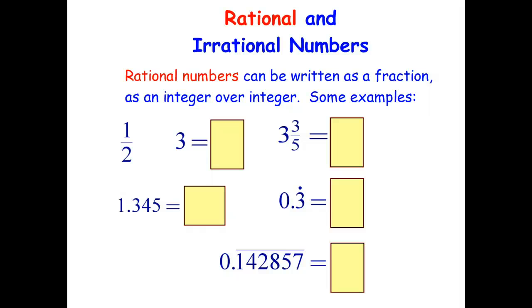Hello students. In the last video we looked at a brief introduction to the theorem of Pythagoras, also known as the Pythagorean theorem. Now before we can go on and explore the Pythagorean theorem a bit further, we first have to divert for a bit and look at some different types of numbers — in particular what are called rational numbers and what are called irrational numbers.